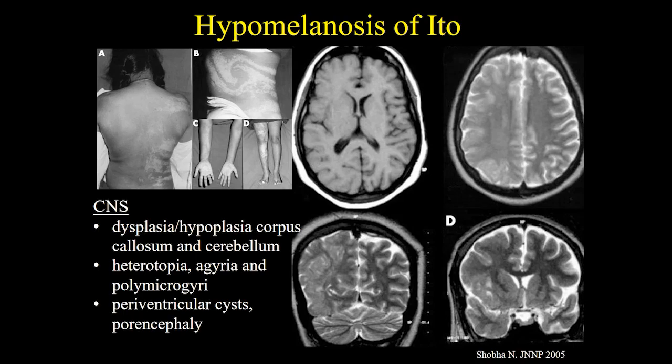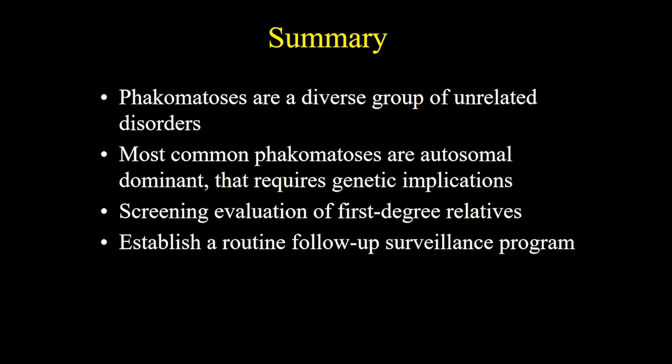This is a case of a patient that has cutaneous hypopigmentation that follows the Blaschko lines. The brain MRI demonstrates white matter hemimegalencephaly associated with polymicrogyria. Phacomatoses are a group of unrelated disorders. They are autosomal dominant conditions that require genetic implications, screening evaluation of first-degree relatives, and establishment of a routine follow-up surveillance program. Thank you very much for your attention.